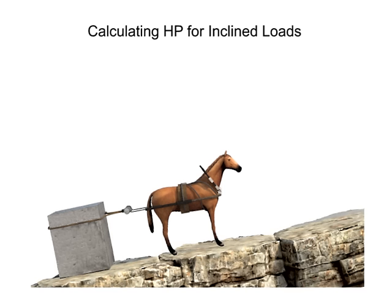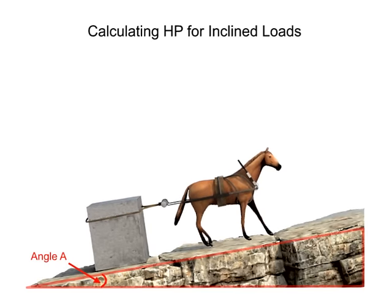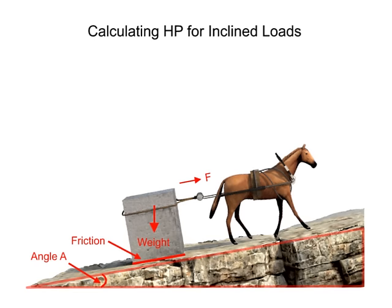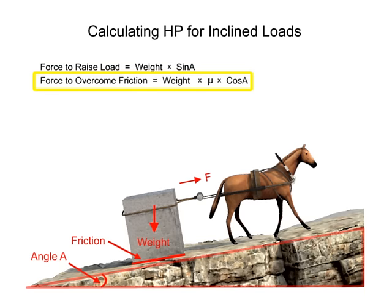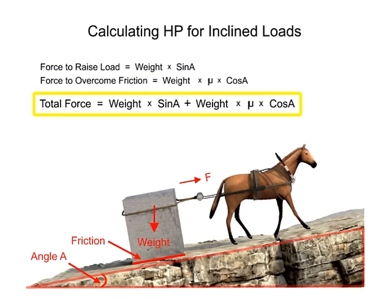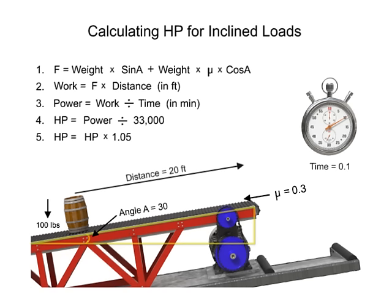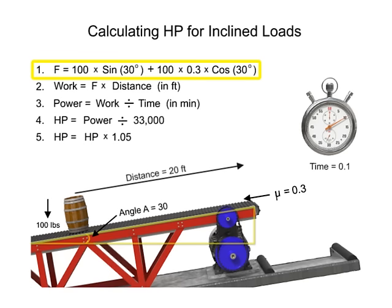If the distance to be traveled isn't on a horizontal surface, the angle of the surface must be taken into account. To determine the total force required, we must add the force required to raise the load to a higher elevation with the force required to overcome the friction. The total force is equal to: weight × sine A, plus weight × coefficient of friction × cosine A. Once these two forces are combined, we can continue with the same steps used previously to calculate the size of the motor required. In this system, the horizontal force is 75.98 pounds.